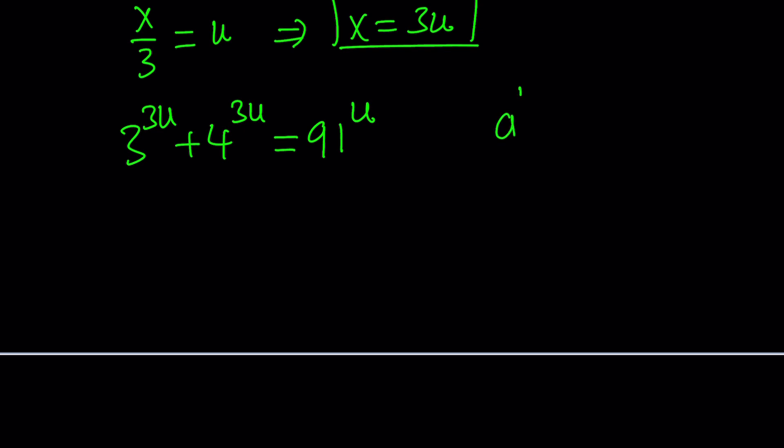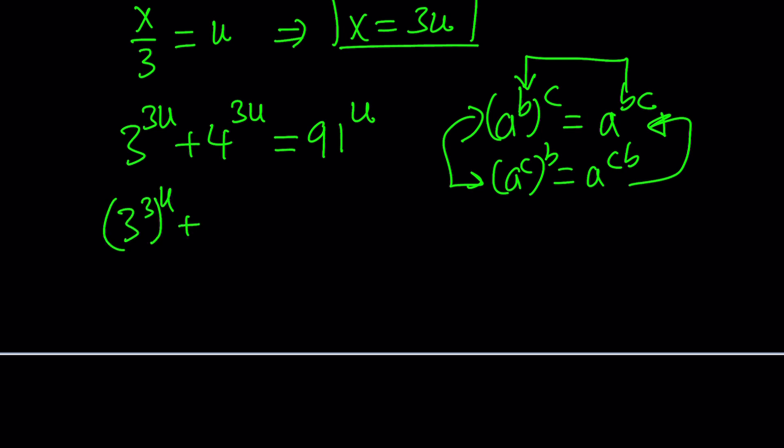How? a to the power b to the power c is a to the power bc. Of course, a to the power c to the power b is also a to the power bc because it's a to the power cb. And bc equals cb. Of course, we're talking about normal multiplication. We're not talking about any multiplication operation in any ring. But, if you have the commutative property of multiplication, yes, this holds. So, 3 to the power 3u can be written as 3 to the power 3 to the power u. And this can be written as 4 to the power 3 to the power u. And this is already 91 to the power u. It's all about u. What is 3 to the third power? 27. You knew that, right?